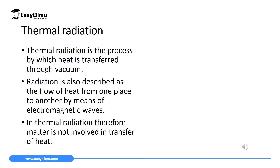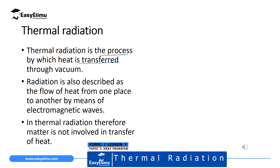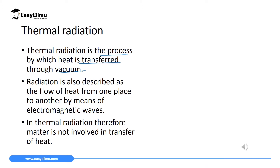Thermal radiation is the process by which heat is transferred through a vacuum — a place where we don't have any state of matter; it's an empty space. Radiation can also be described as the flow of heat from one place to another by means of electromagnetic waves. Electromagnetic waves do not require any material medium for transmission, so in thermal radiation, matter is not involved.